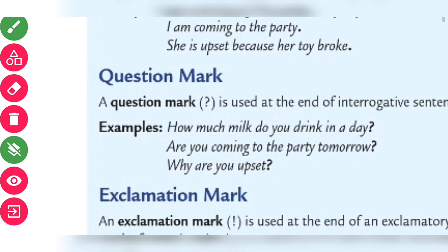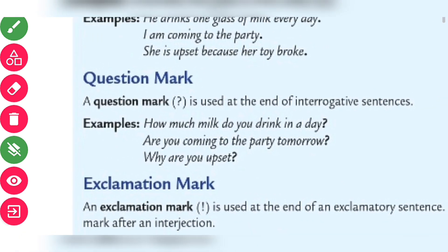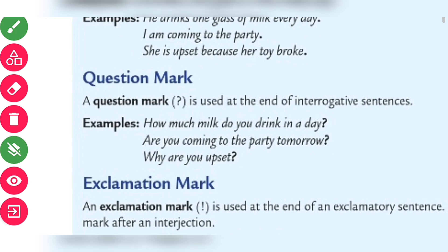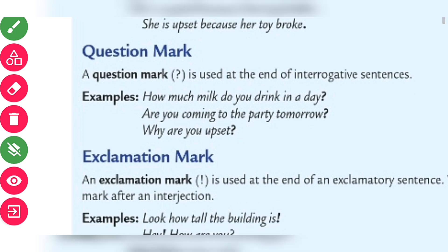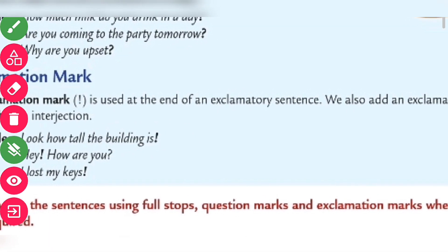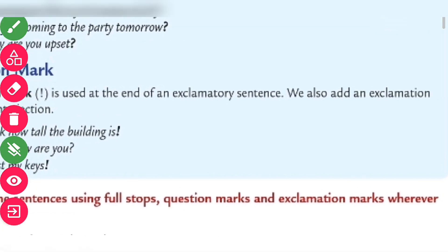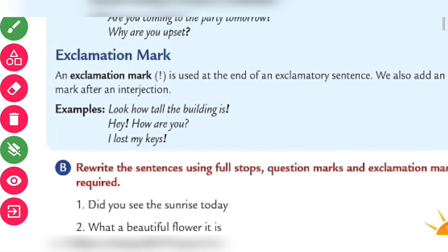A question mark is used at the end of an interrogative sentence. How much milk do you drink in a day? Are you coming to the party tomorrow? Why are you upset? An exclamation mark is used at the end of an exclamatory sentence. We also use an exclamation mark after an interjection.